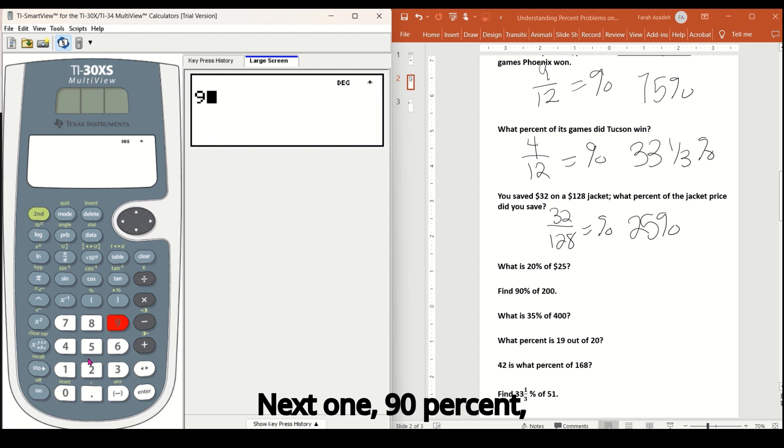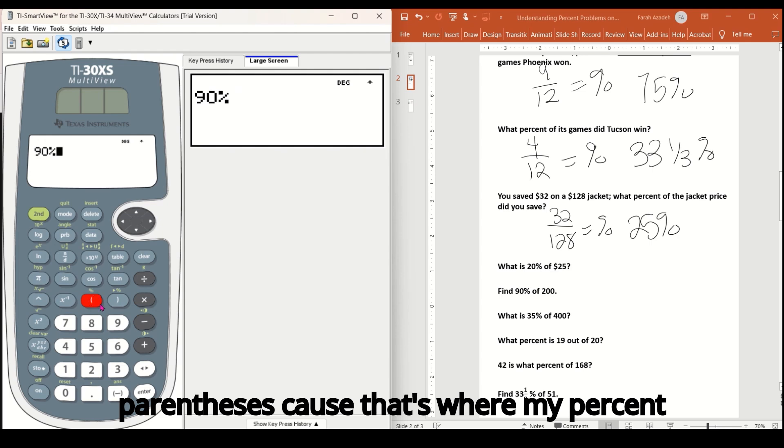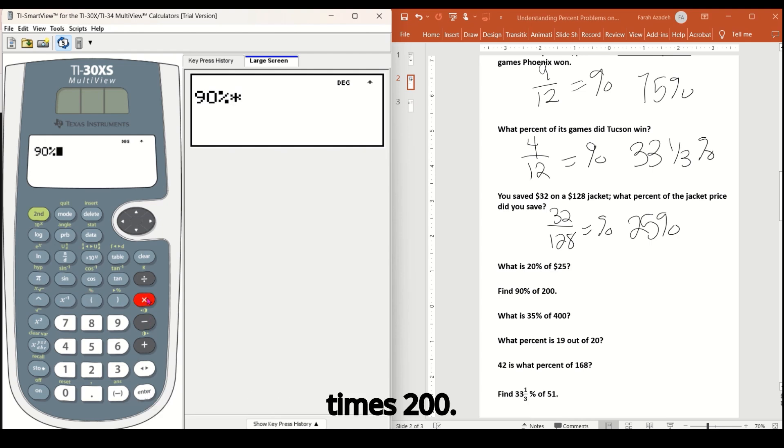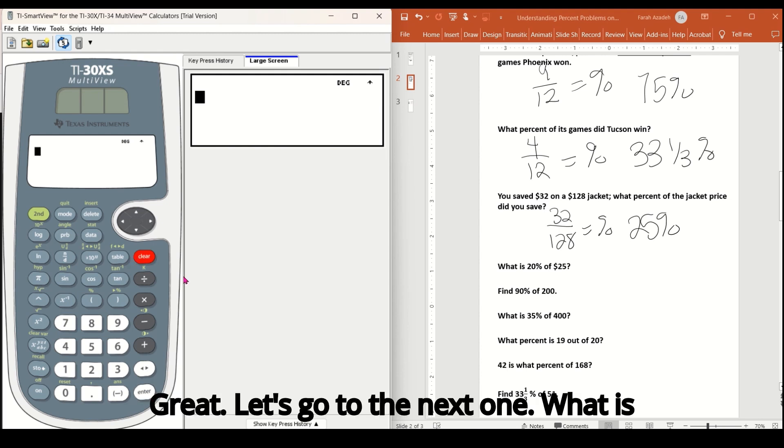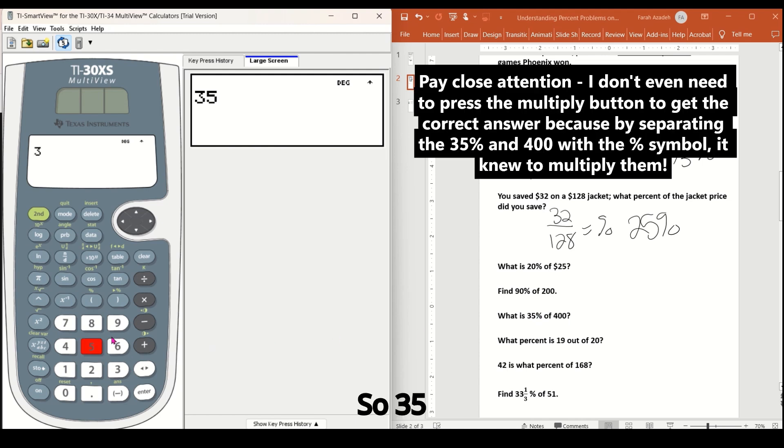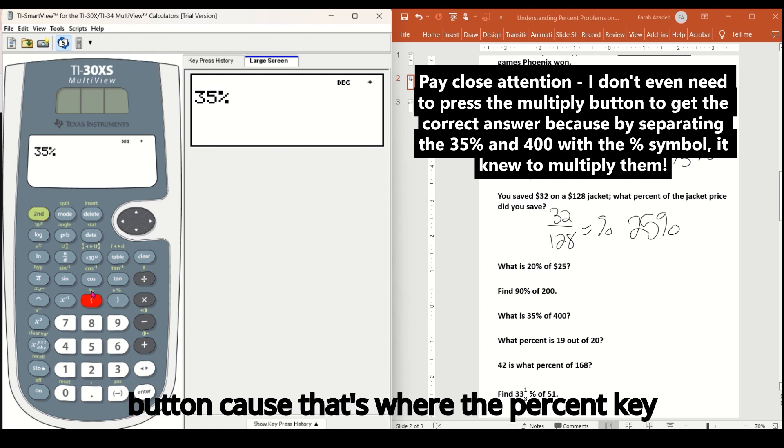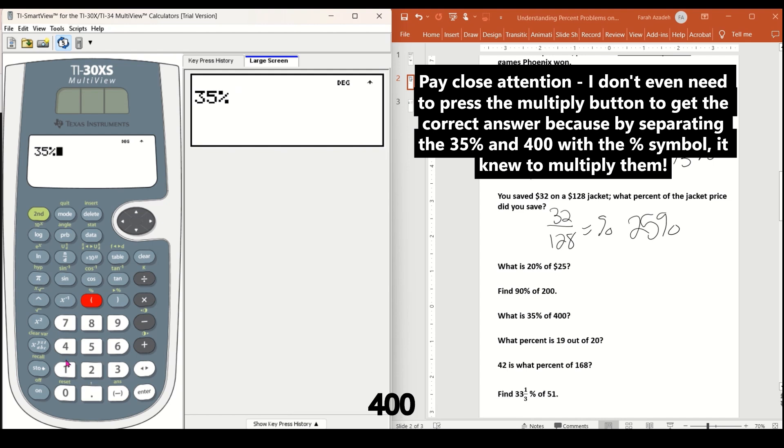Next one, 90% 90 second, open parentheses, because that's where my percent is as a second function times 200. So 90% of 200 is 180. Great. Let's go to the next one. What is 35% of 400? So 35 seconds, open parentheses button, because that's where the percent key is above it. We have 400. Enter is 140.